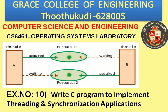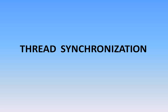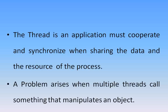CS8461 Operating Systems Laboratory Exercise Number 10: write a C program to implement threading and synchronization application. Before doing the program, we want to know the concept of thread synchronization. A thread in an application must cooperate and synchronize when sharing the data and resources of the process.